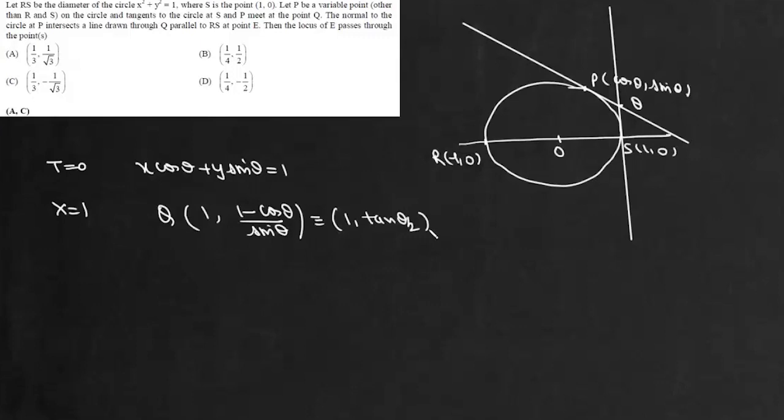The normal to the circle at P intersects a line drawn through Q parallel to RS at point E. So normal through P intersects a line drawn through Q parallel to RS at point E. So we have drawn a line at this point Q and this line is y = tan θ/2 and it intersects at this point E. And we have to find locus of E.